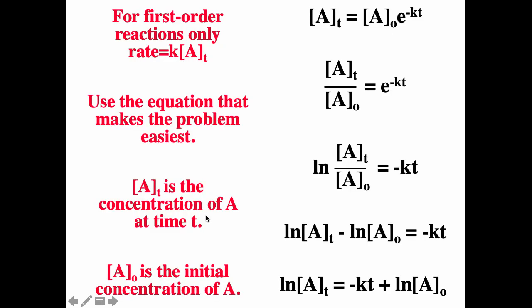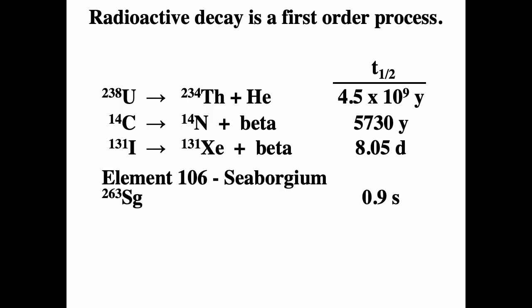These are the important equations for first order processes. The first equation lets you calculate the concentration at some time t given the initial concentration and the rate constant. The second can be solved for t to find how long it takes to reach a certain ratio of concentrations. The third equation shows that for a first order process, the natural log of the concentration as a function of time is a straight line. All radioactive decays are first order processes, so these equations are fairly important in nuclear chemistry as well.